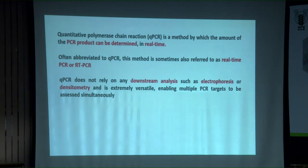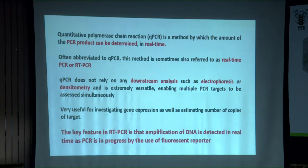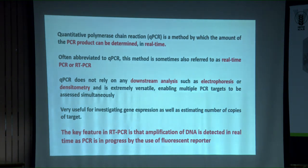qPCR is very useful for investigations on gene expression as well as estimating the number of copies of the target, both of which are relevant for subjects like plant pathology. The key feature of qPCR is that the amplification of DNA is detected in real time as PCR is in progress, with the help of a fluorescent reporter. The reaction in the tube is monitored using chemicals added in the PCR mixture.